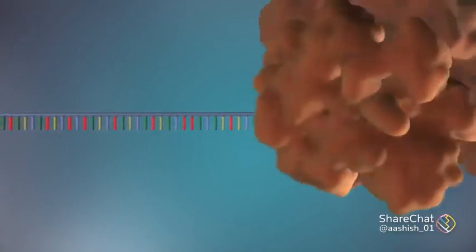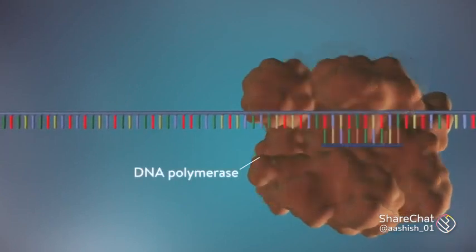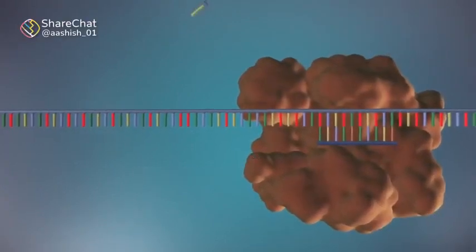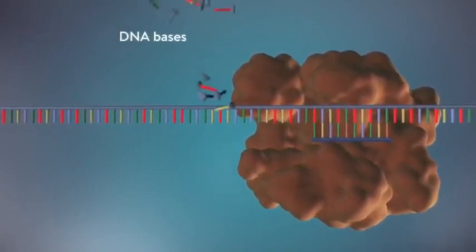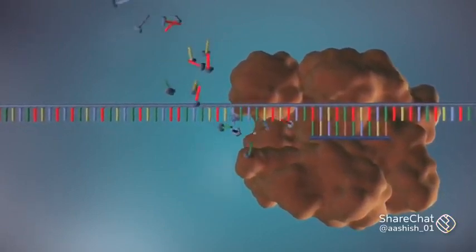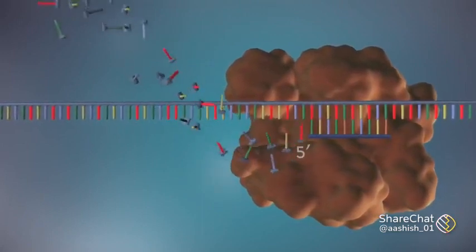An enzyme called DNA polymerase binds to the primer and will make the new strand of DNA. DNA polymerase can only add DNA bases in one direction, from the 5' end to the 3' end.